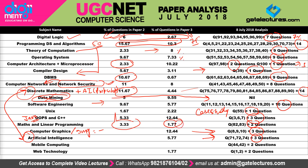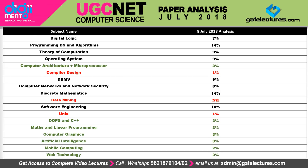In artificial intelligence they asked three questions — again no huge change, given that some AI portions such as predicate logic were combined with discrete mathematics. From mobile computing only two questions were asked, and one of those can actually be mapped to computer networks. In web technology they asked two questions, which is not a huge change. So the only major change this year is that no questions came from data mining.